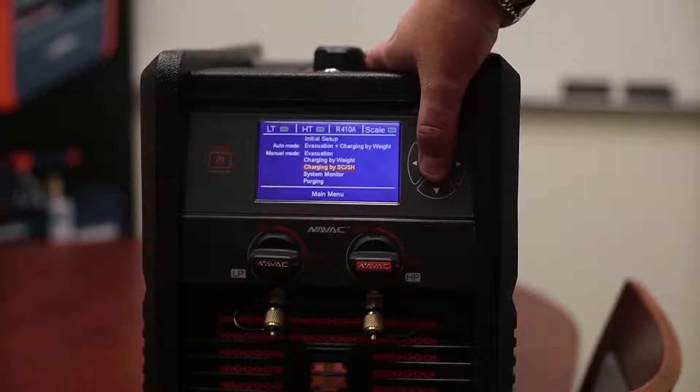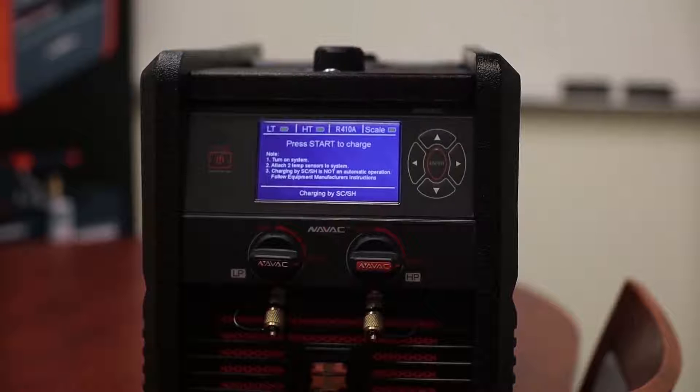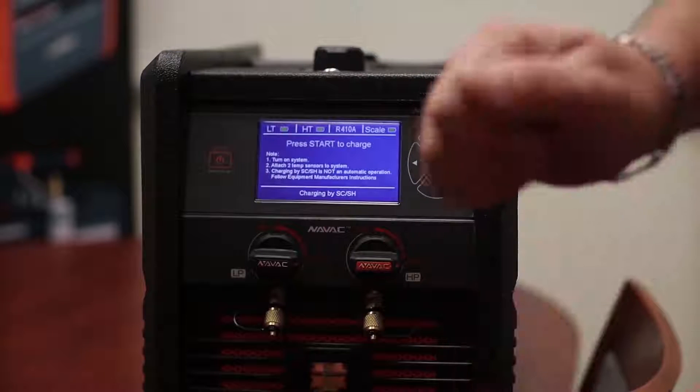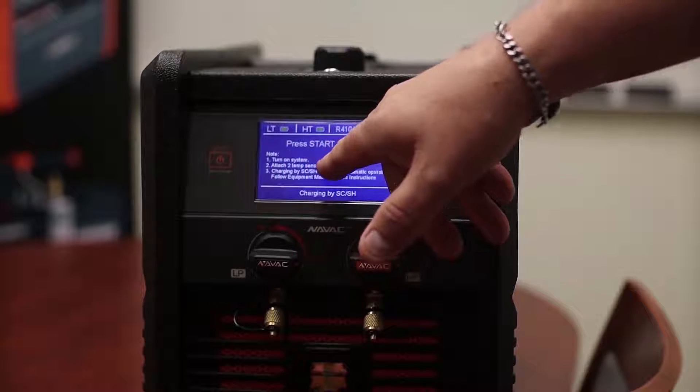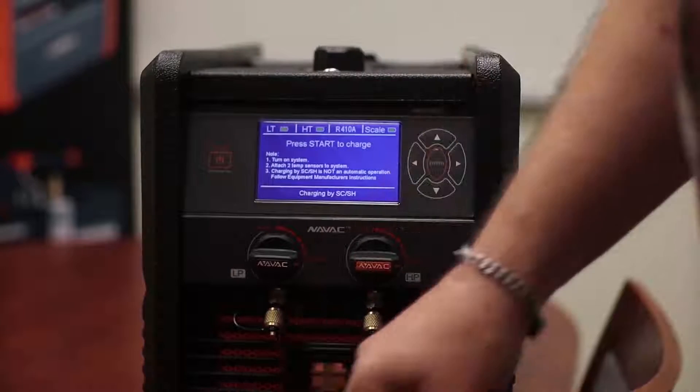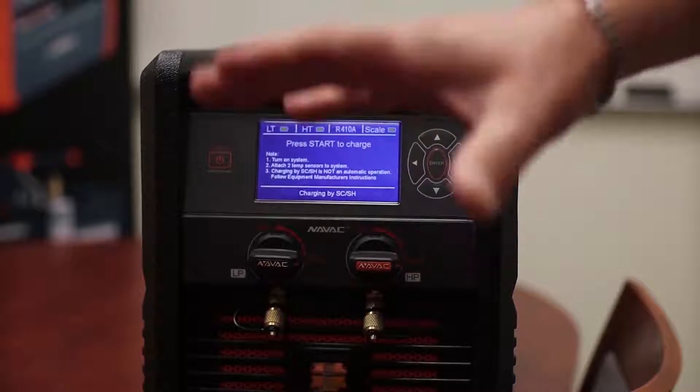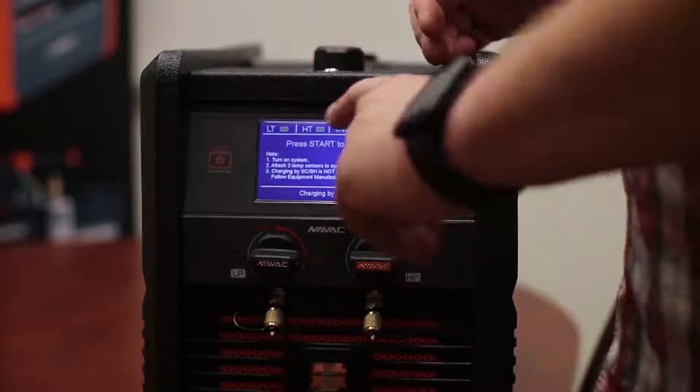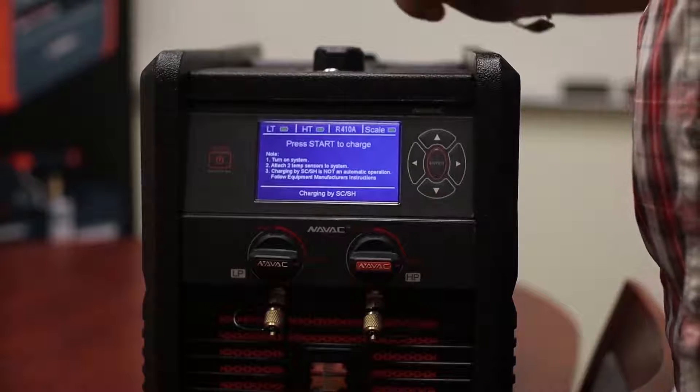Charging by superheat subcooling. So again, we've got everything connected. We've got our hoses, our tanks. It tells us, turn on the system, attach the two temperature sensors to systems. So we've got our high and low side. We attach them. Charging by superheat subcooling is not an automatic operation. We're not going to program our target subcooling and push start and let it do it. That's not the way it works.